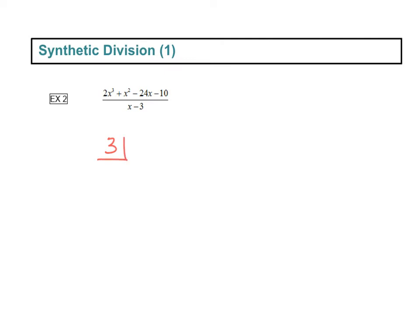And then we're going to write the coefficients of the polynomial up here in the numerator of our fraction. So there's a 2x cubed. We're going to write the 2. x squared has a 1 in front. x has a negative 24. And then you've got your constant on the end, 10. Then we draw our little line, leaving some space knowing we're going to fill some numbers in here.